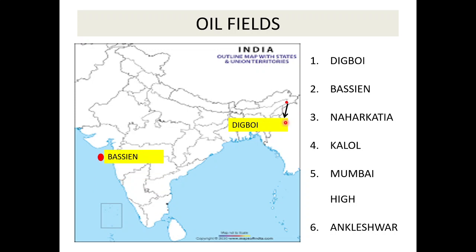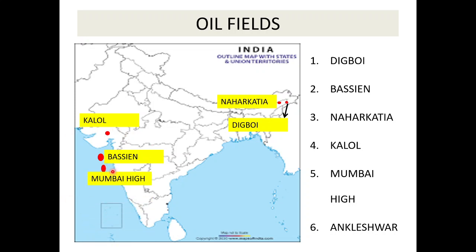Second is Bassein — near Maharashtra, in the sea. Third is Naharkatiya — also in Assam. Fourth is Kalol — in Gujarat. Fifth is Mumbai High — most important, near Maharashtra, also in the sea, where oil is extracted. Last is Ankleshwar — also in Gujarat. So these six oil fields: Naharkatiya, Digboi - Assam, Kalol, Ankleshwar - Gujarat, Bassein, Mumbai High - Maharashtra, in the sea near Mumbai.